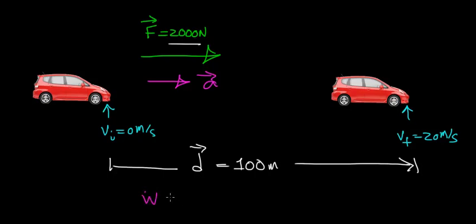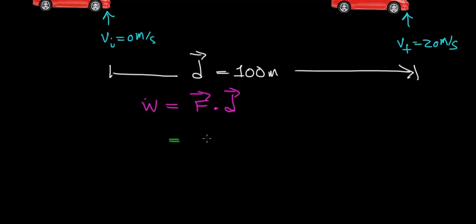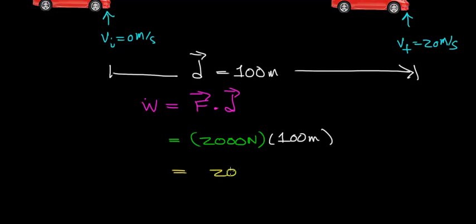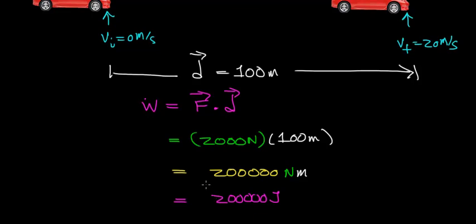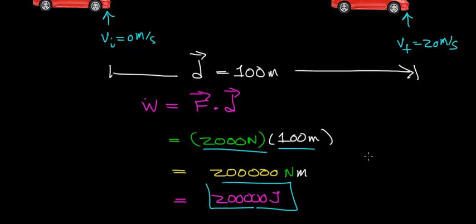To determine the answer, we use our definition of work: work equals force times the distance over which the force acts. The force equals 2,000 newtons, and it acts in the same direction the car is displaced, so we multiply by 100 meters. 2,000 newtons times 100 meters equals 200,000 newton meters, and since a newton meter is a joule, 200,000 joules of energy is required to increase the velocity of this car. In other words, the 2,000 newton force transfers 200,000 joules of energy to the car over a distance of 100 meters.